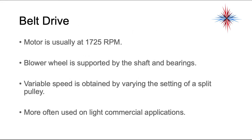The other type of blower assembly is called a belt drive. The motor is usually 1725 RPM. The blower wheel is supported by the shaft and bearings. Variable speed is obtained by varying the settings of a split pulley — in other words, how tight the belt is. It's more often used in commercial applications; you don't see a lot of these in residential.